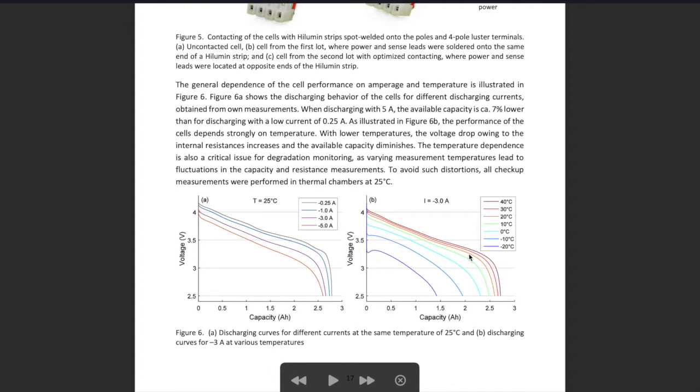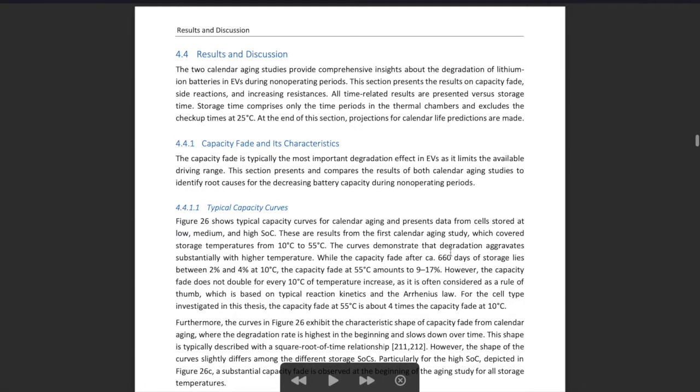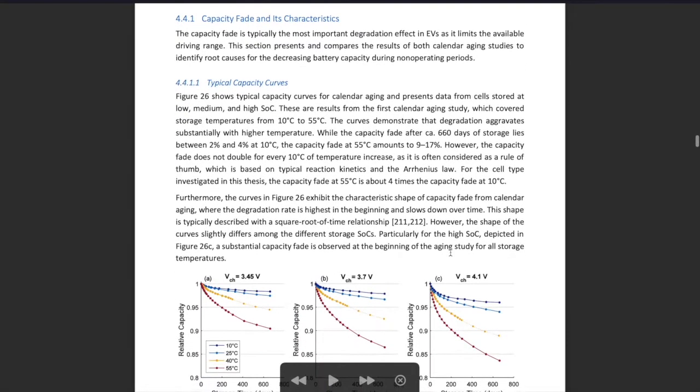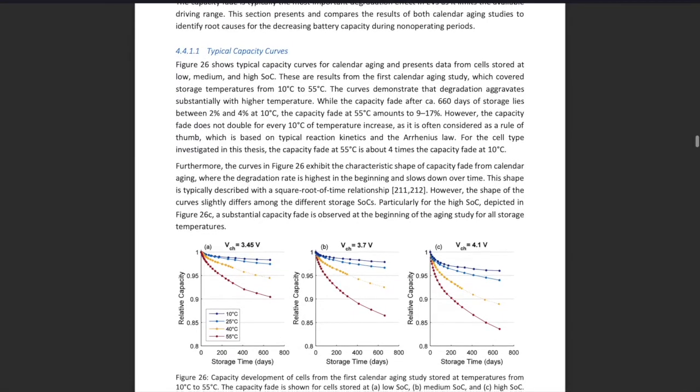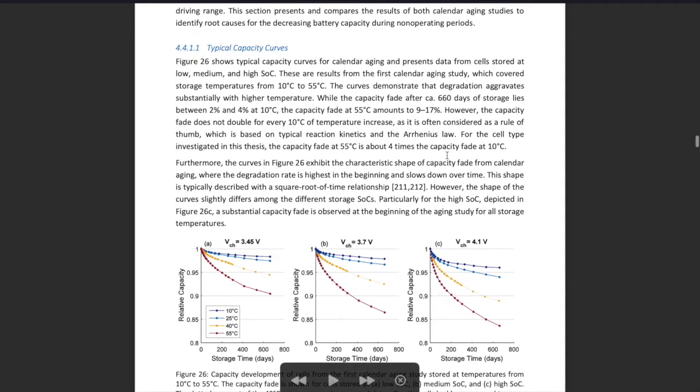Here we have a charge-discharge graph. Down here is the capacity which we're able to get out of a cell, and you see it's strongly dependent on temperature. That was a bit fast, but it's not the main point.